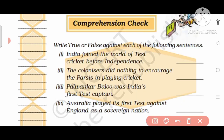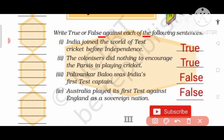Now we will do comprehension check on page number 146. Write true or false against each of the following sentences. Number 1: India joined the world of test cricket before independence. Answer is true. Number 2: The colonizers did nothing to encourage the Parsis in playing cricket. The answer is true.